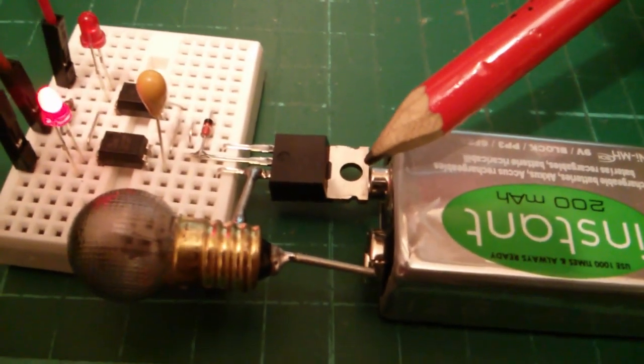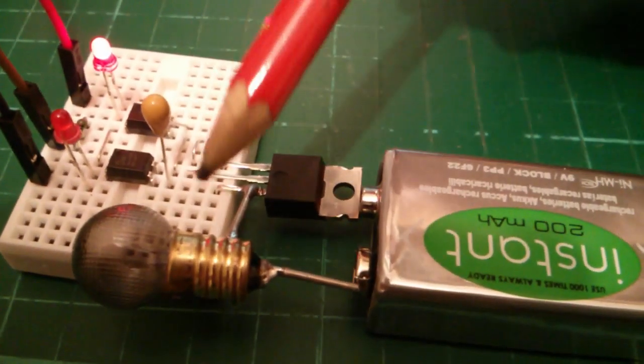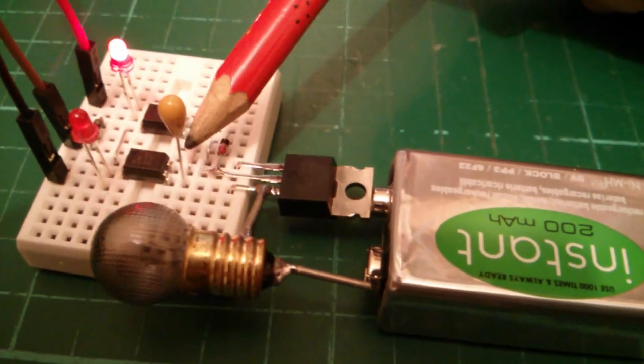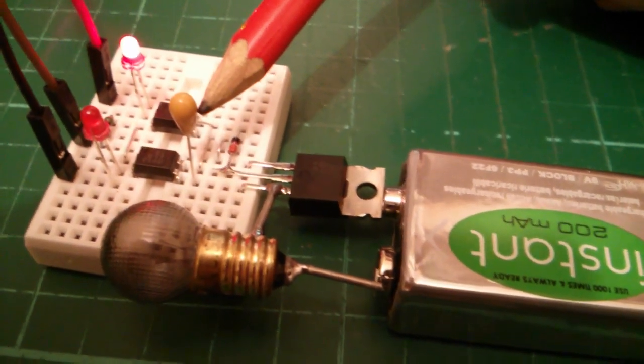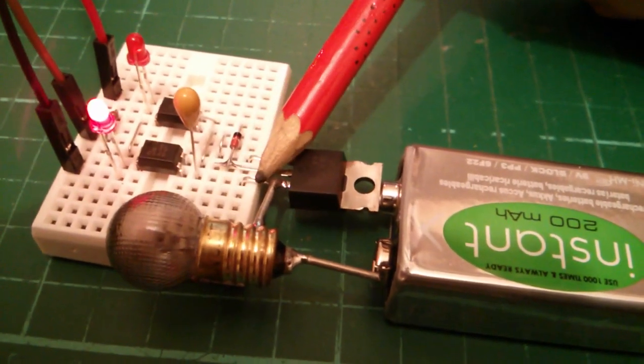Normally, driving N-channel MOSFETs on the high side of a circuit is a problem, but to overcome that problem, I'm using a bootstrap. The way the bootstrap works is that this 3.3 microfarad tantalum capacitor has its negative terminal connected to source.